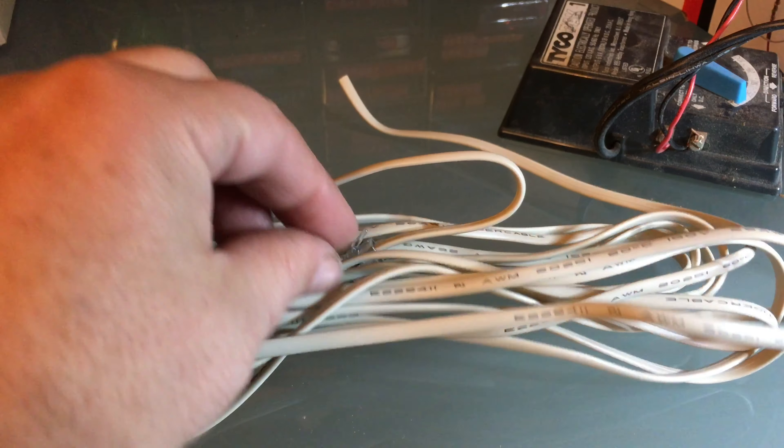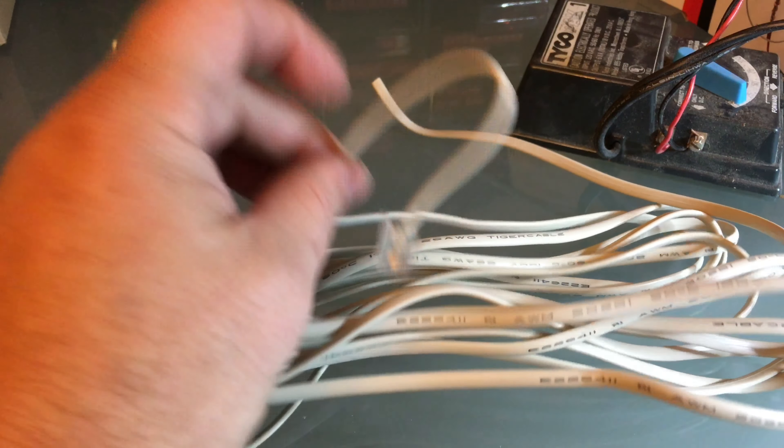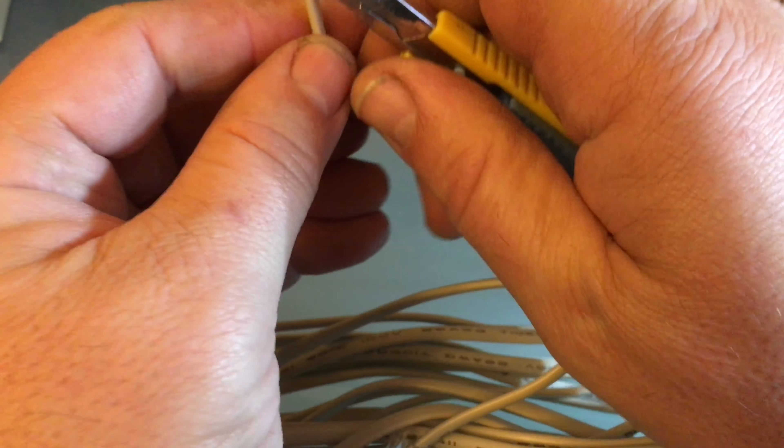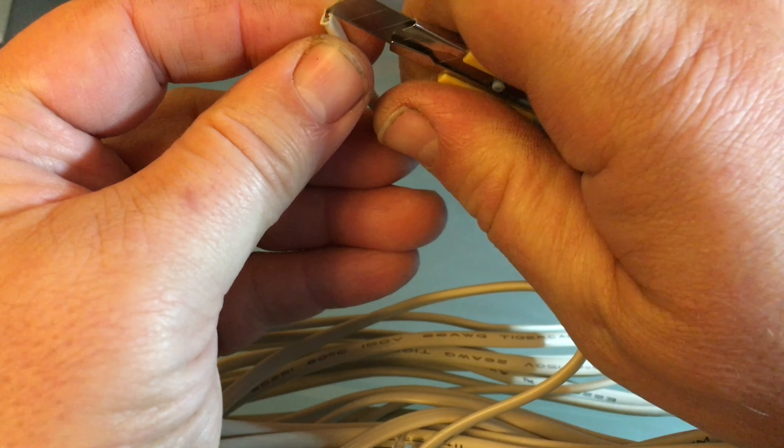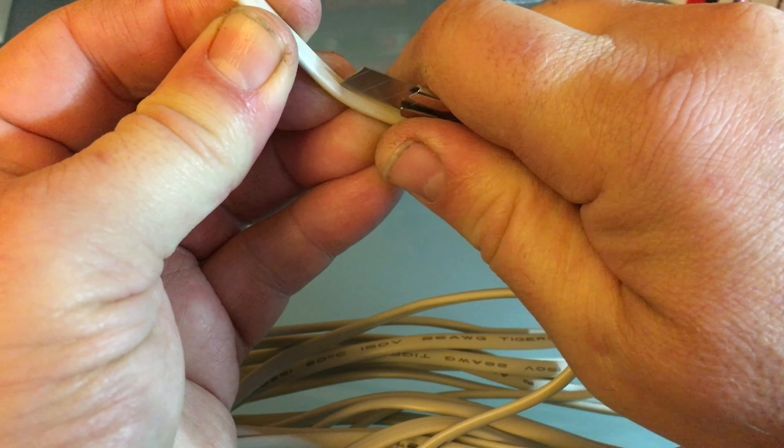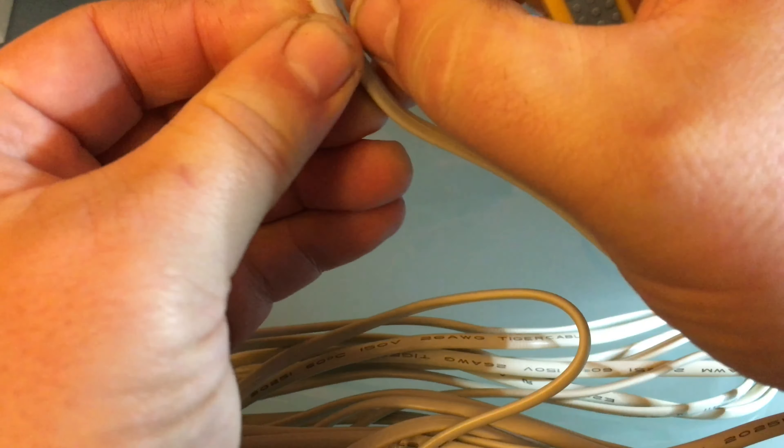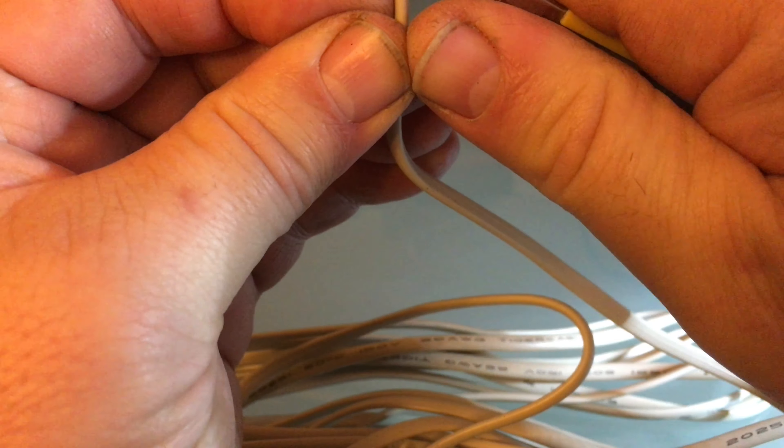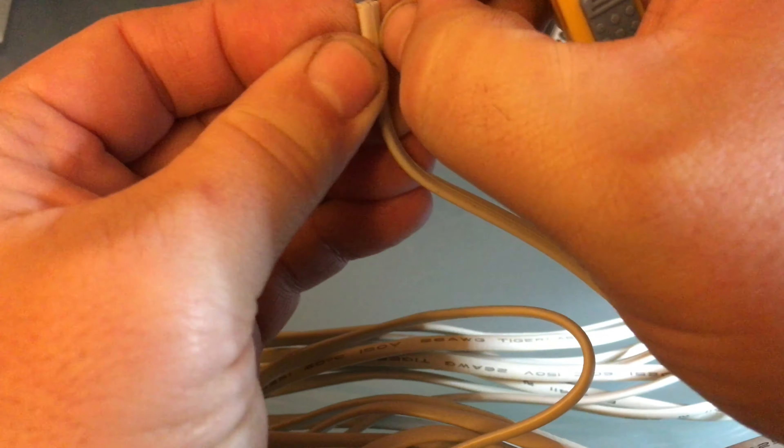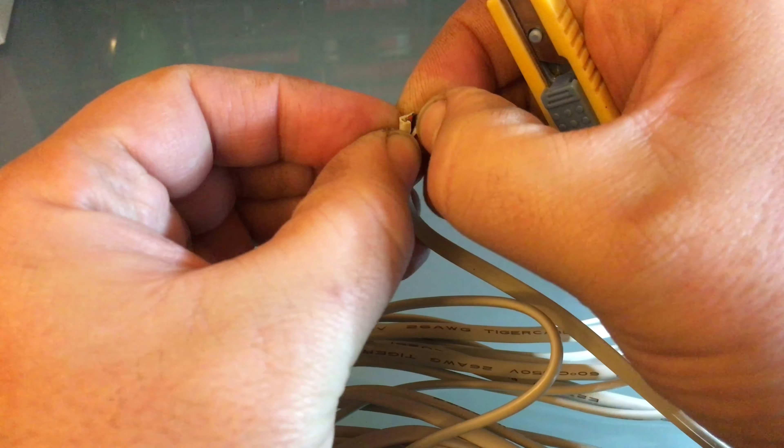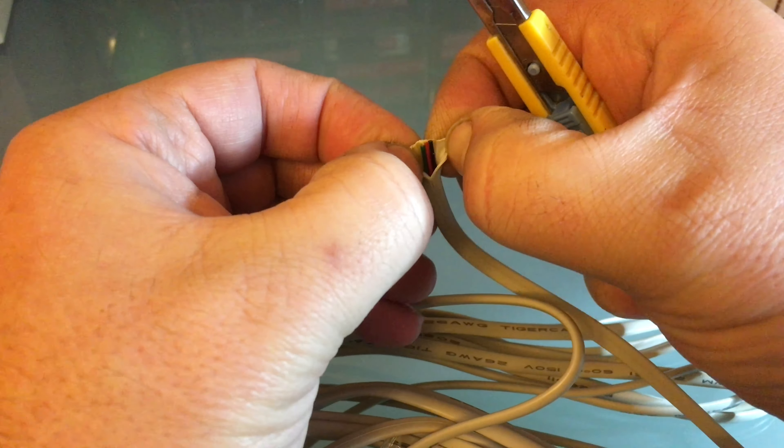I've shown this before on this channel how I use an old telephone extension cord for a source of wire. I just remove the insulation, I remove this beige strip just to reveal the wires. Careful with the exacto knife not to injure yourself, but you basically just remove the sheathing and then you've got some nice wires inside that you can use for your model railroad.